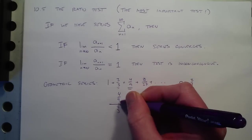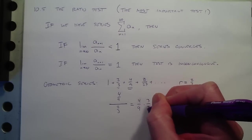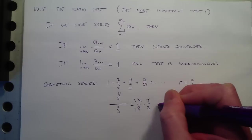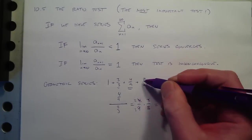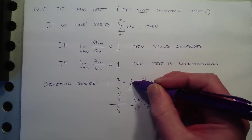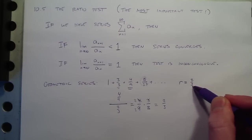Now, of course, a fraction divided by a fraction, that's dividing by a fraction, is the same as multiplying by the reciprocal, and that gives me 2 thirds. 2 thirds. And notice, whatever two terms you use, if you take a term and divide by the term before it in a geometric series, you're always going to get 2 thirds, right?